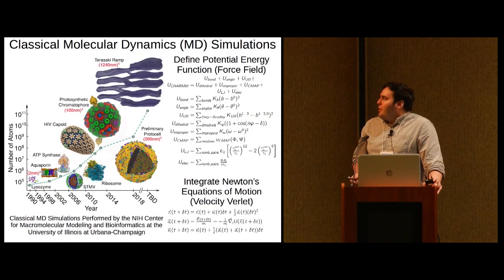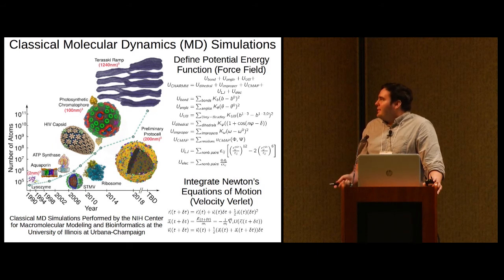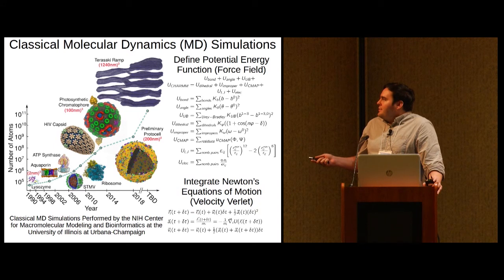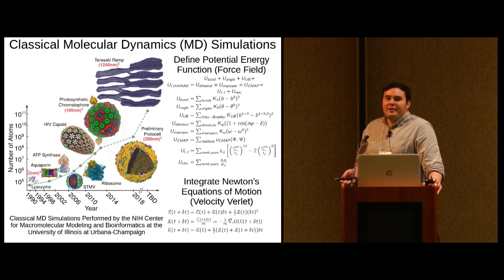Just to drive the point home on scale a little bit, this is a Terasaki ramp, which I'll be introducing a little bit more later on. But it's a representative cellular membrane that we've been using to develop XMIS Builder. And it is orders of magnitude from what is considered a standard MD simulation in this day and age, which is around 50,000 atoms up to maybe a million atoms.